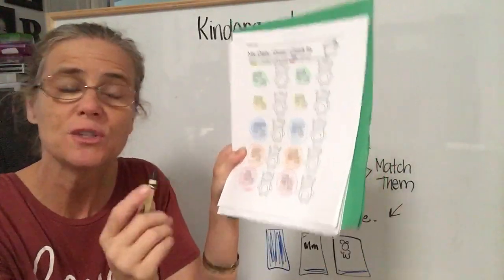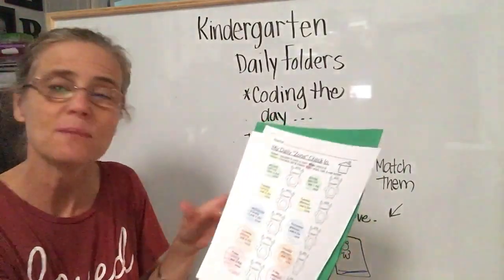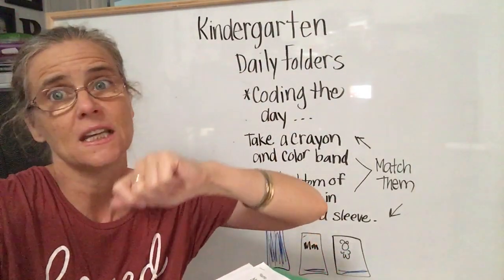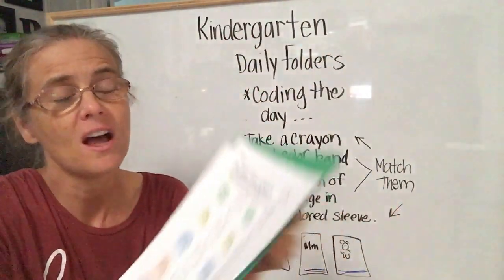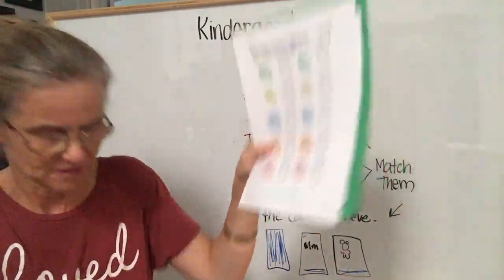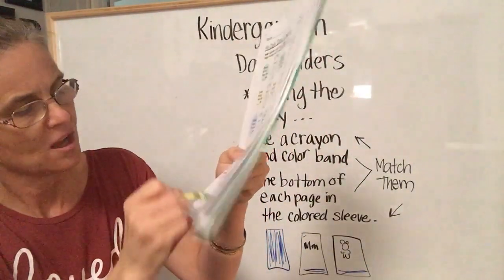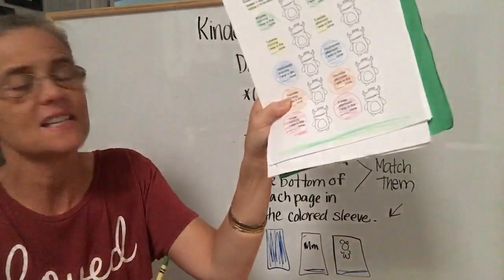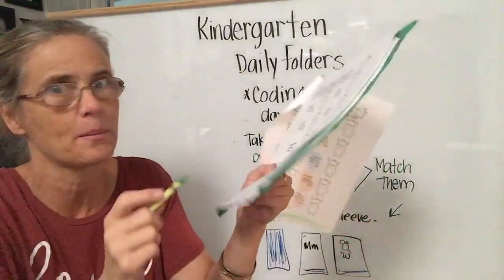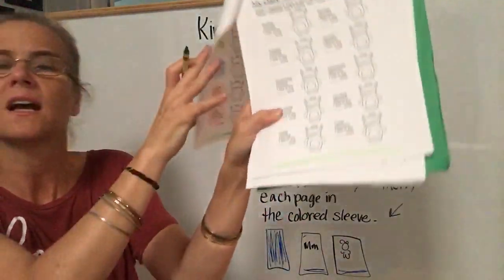I'm going to take my packets — I don't want to unstaple them — but what I'm going to do is run a color band across the bottom of each page. That way, if it falls out or if I accidentally remove it from the staple, I'll know which packet it goes back into. I'm just going to scribble a little color band across the bottom.